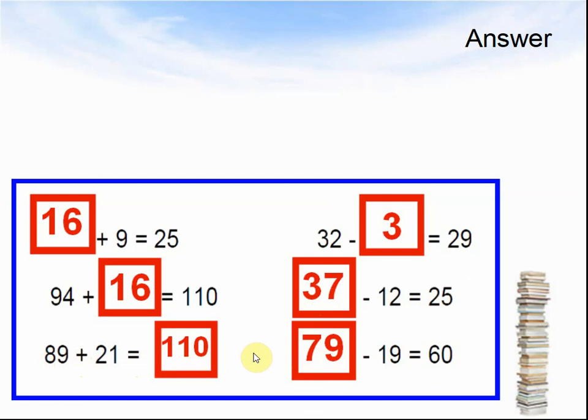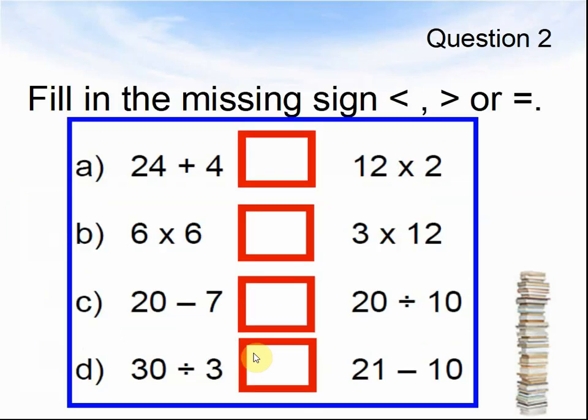Let's look at the next question. Question 2. Fill in the missing sign: smaller than, bigger than, or equals. This is how you do this question. You work out what each side of this sum is worth, and then you tell me, is it smaller than, bigger than, or equal to the other side.